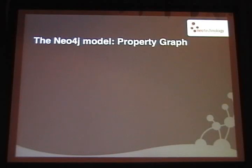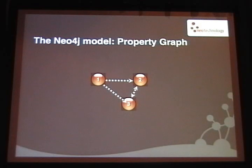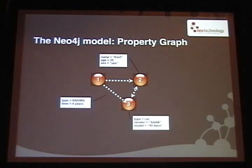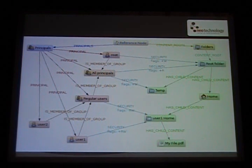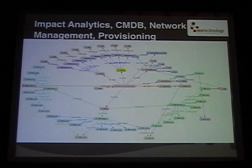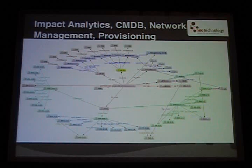What is Neo4j? It's a database that stores things in graphs — nodes, relationships, and properties on these. That's the basic model. With that you model your domain. For instance, a customer relationship management system or a CMS, content management system with data structures around a business, or a network topology across data centers. We have all those things mapped out.